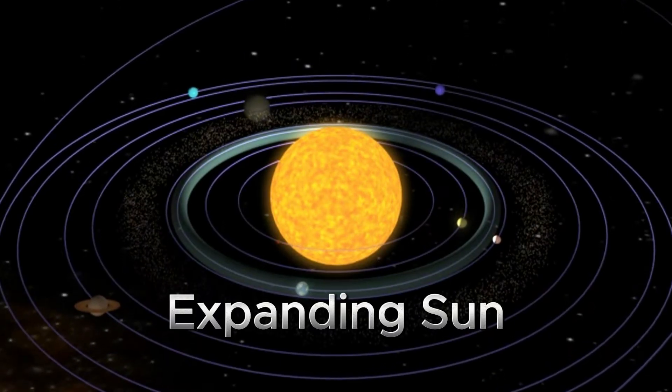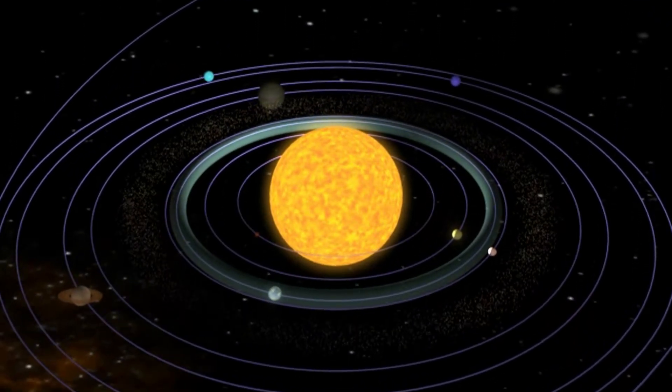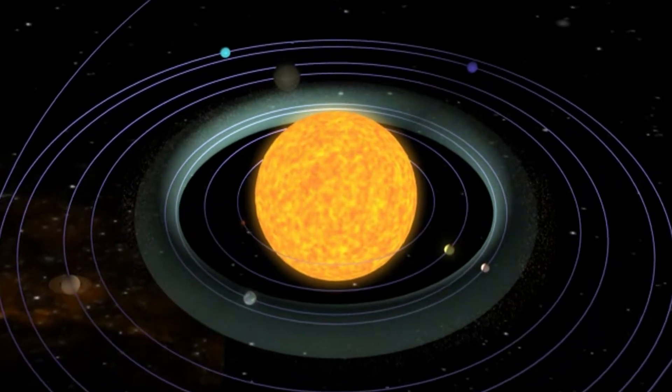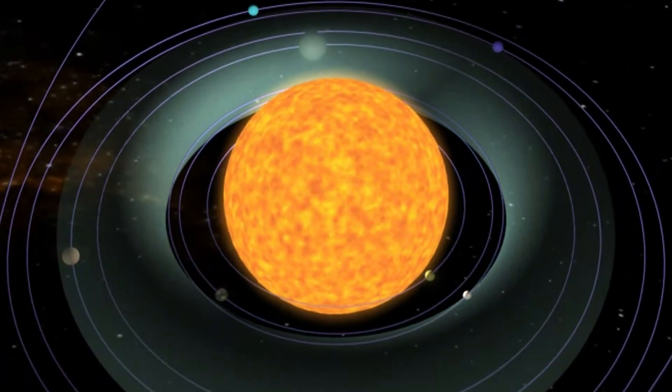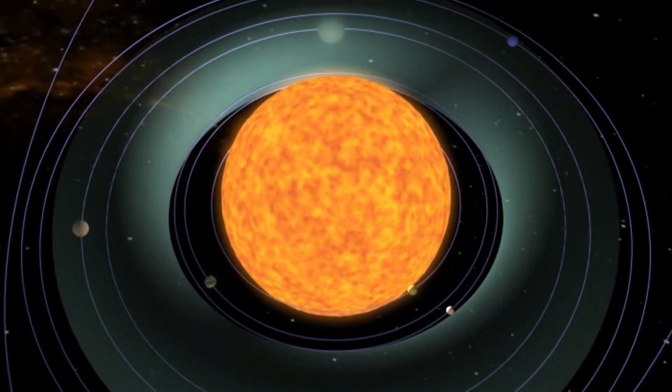In about five billion years, our Sun will run out of hydrogen fuel. When that happens, it'll swell into a red giant, engulfing Mercury, Venus and maybe Earth.